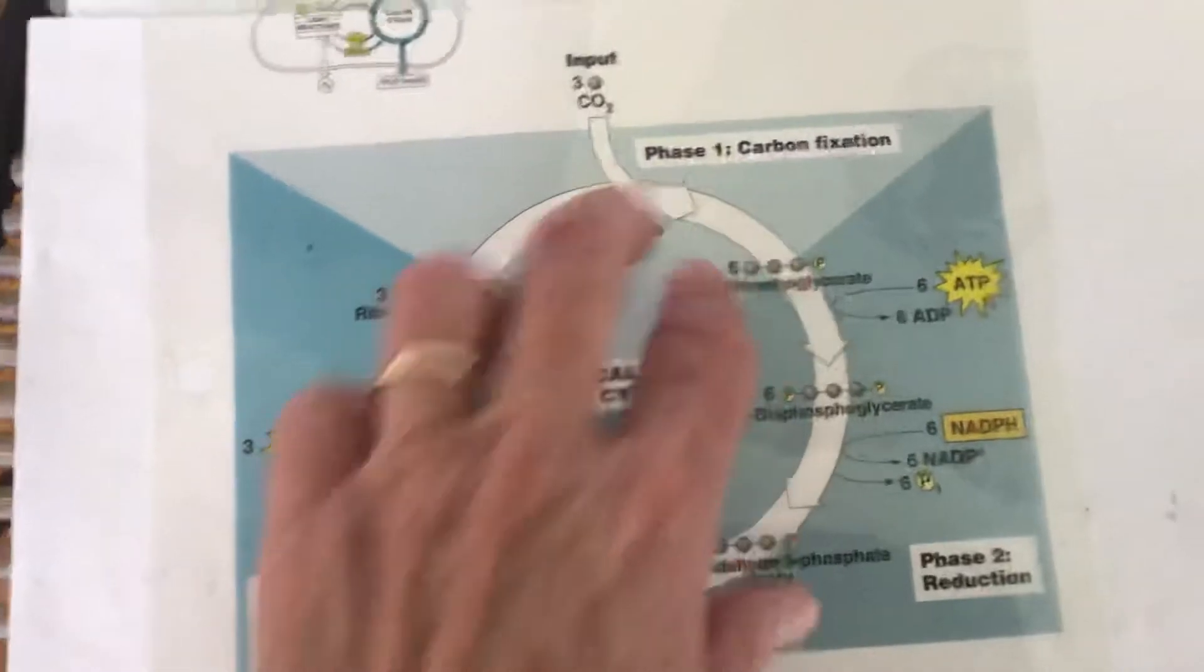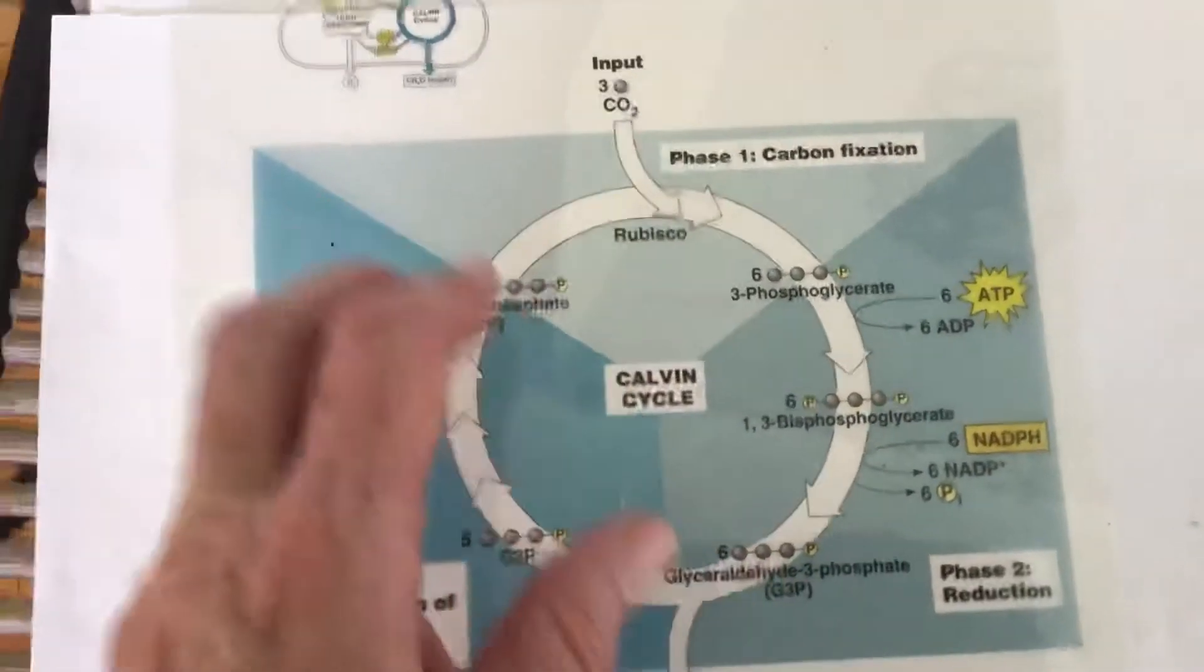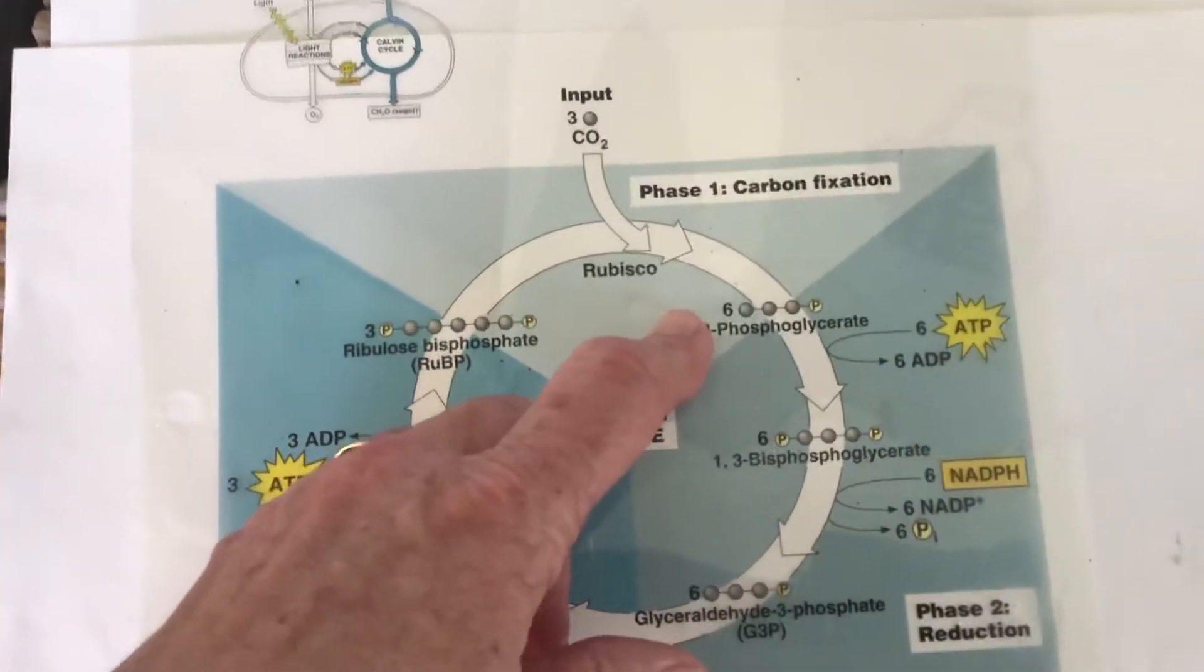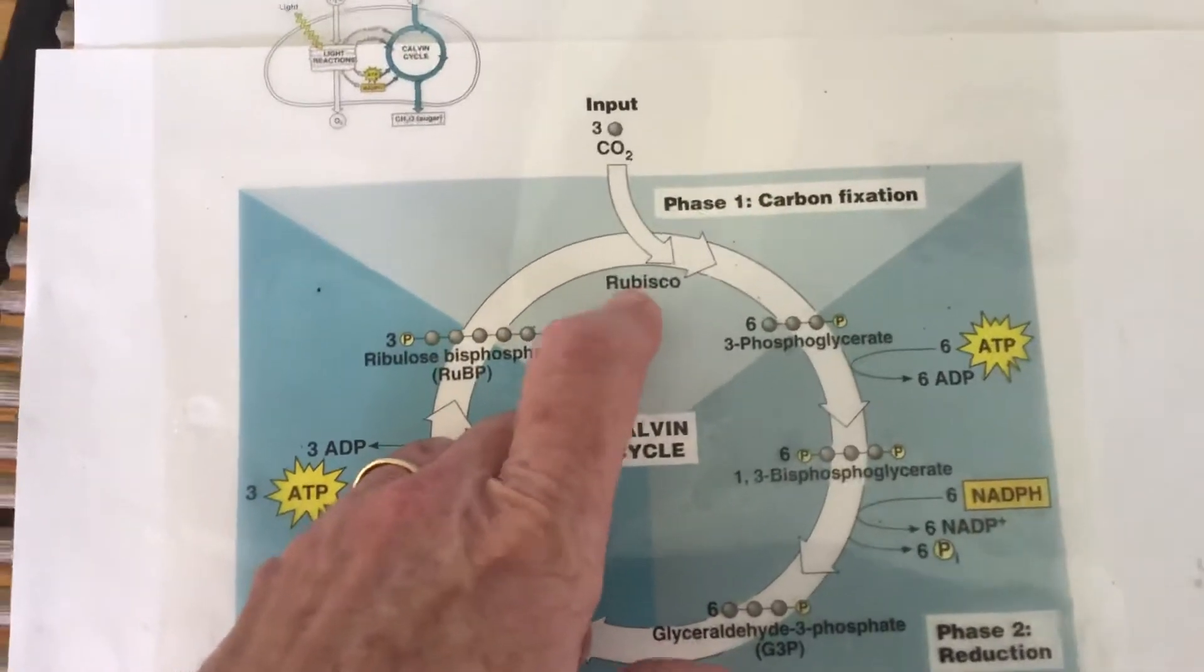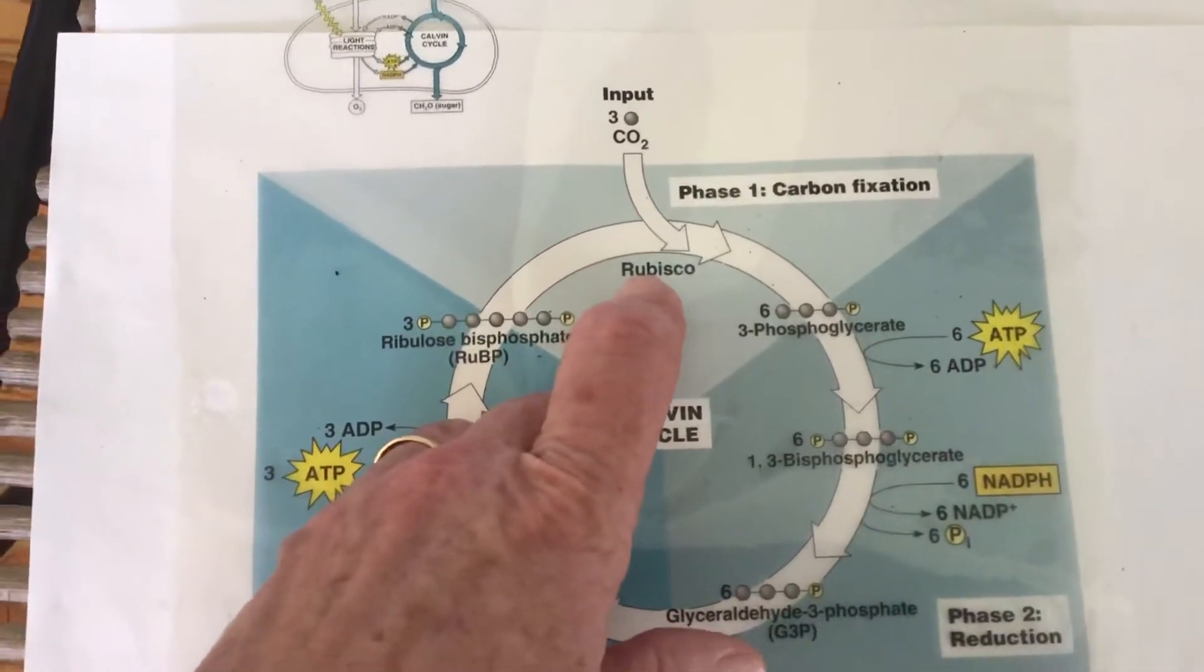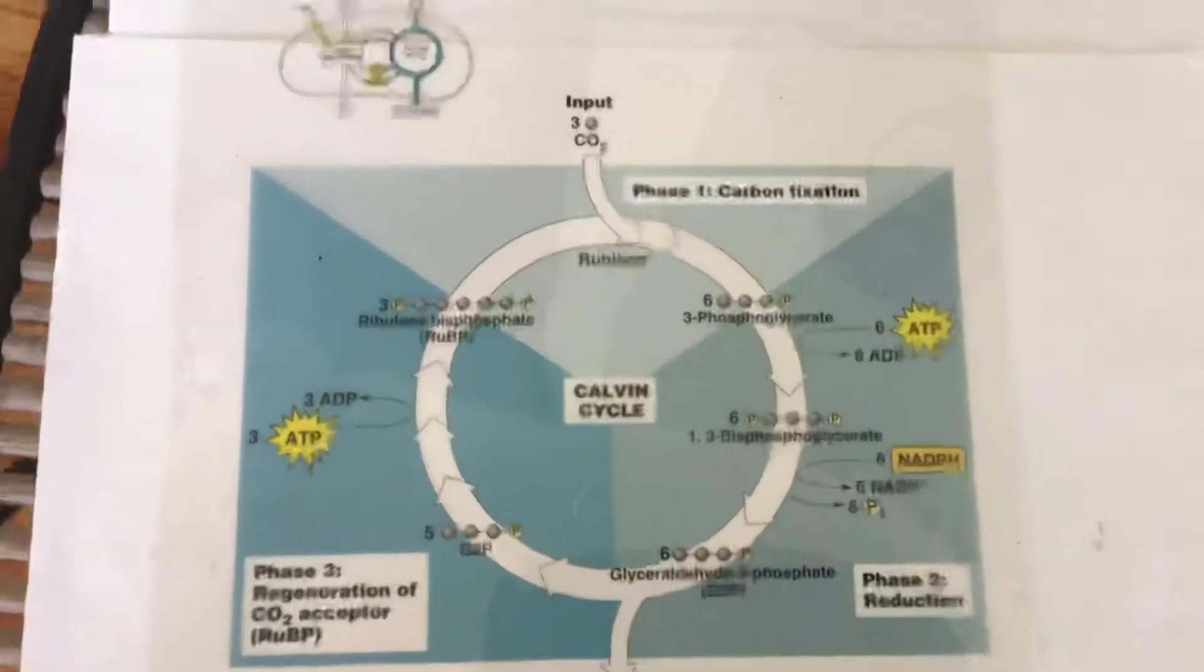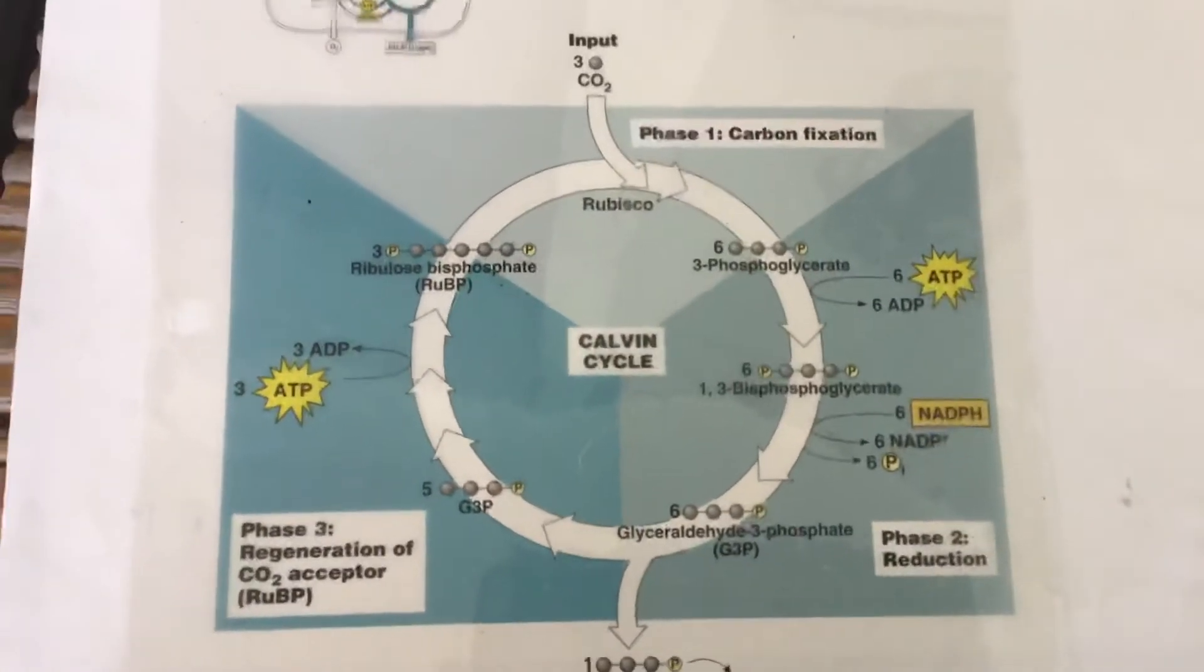So this part is what they call the carbon fixation part, where the carbon comes in, it gets fixed in a molecule, and then makes this PGAL. Now, the enzyme that catalyzes this is called rubisco. It's a very, very common enzyme because photosynthesis is happening in a big way planet-wide. So it's one of the most common substances, actually, on the planet, that and cellulose.